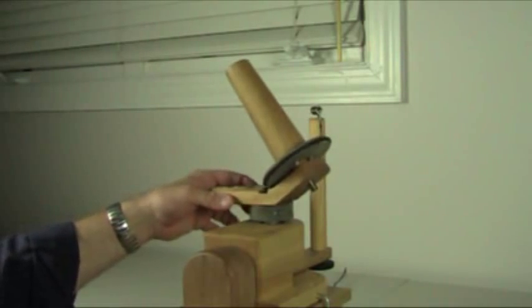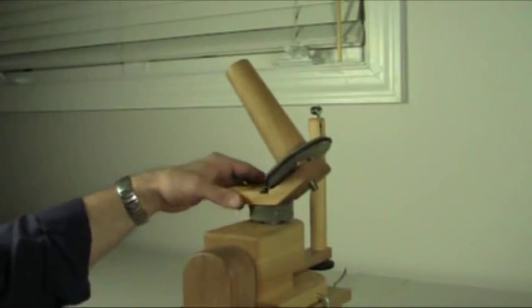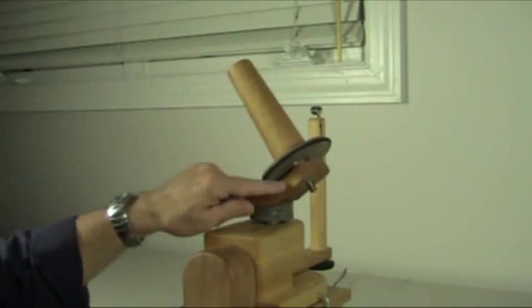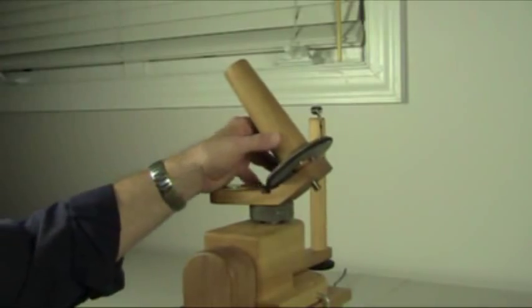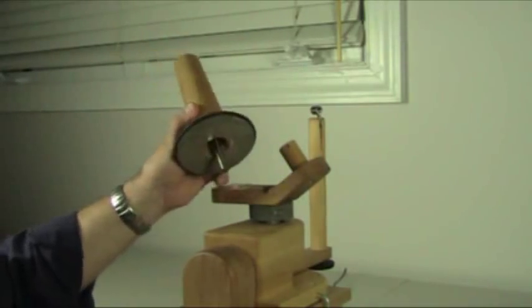Before we get started, let me explain the different parts of the ball winder we will be working with today. This is the spindle arm, the wooden piece. It holds the spindle. This is the spindle.